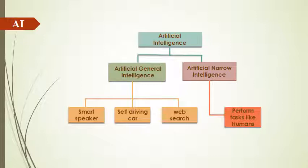AI is mainly divided into two broader types. One is Artificial General Intelligence and the other is Artificial Narrow Intelligence. Artificial General Intelligence is mainly focused on applications such as smart speakers, self-driving cars, and web search, while Artificial Narrow Intelligence performs tasks like humans.